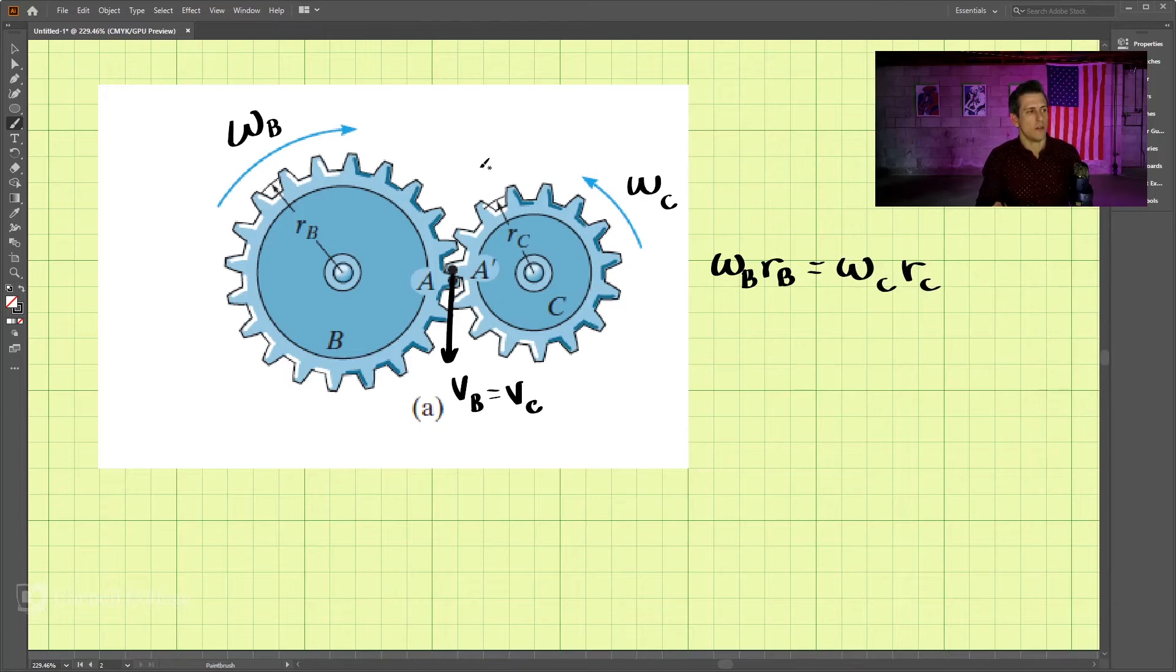Now, notice how these are rotating in opposite directions. This one's rotating clockwise, and this one's rotating counterclockwise. How does this equation factor this in? Well, it doesn't. But if we did perform our vector analysis, where we did omega B cross RB equals omega C cross RC,